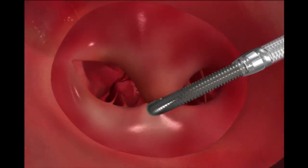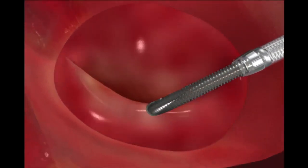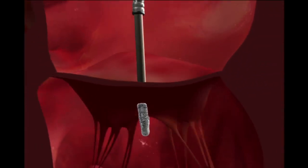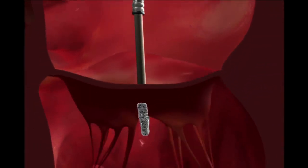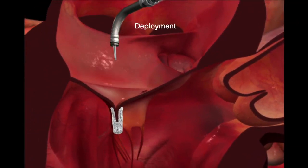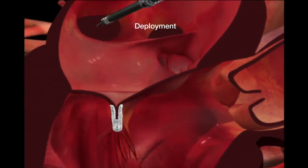The double orifice opening allows blood to flow on both sides of the clip. The grasp and MR reduction are assessed before the clip is deployed. The catheters are then removed.